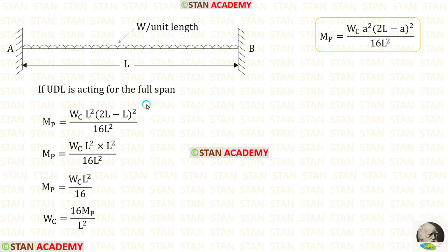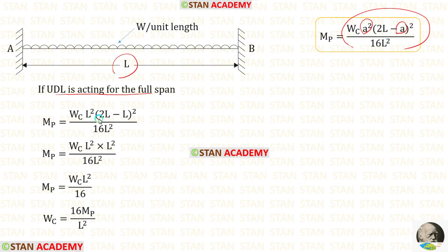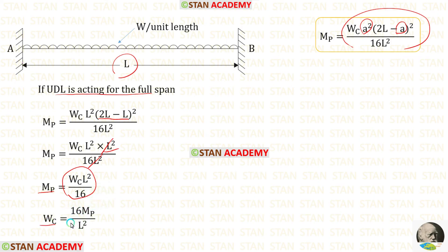Now let us see two standard cases. First, if UDL is acting for the full span. In this formula, instead of A, we apply L. (2L minus L) whole squared gives L squared. We can eliminate L squared. For MB, we get WL squared upon 16. And for WC, we get 16MB upon L squared.